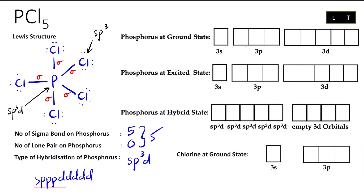Phosphorus at ground state — we have five valence electrons in period three: one, two, three, four, five. I directly draw the empty 3d orbital because I only have three unpaired electrons for bonding, but I need five. That's why I can excite one electron into the empty 3d orbital.